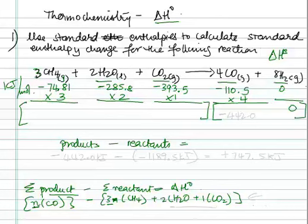After doing all the math, I will not write each number, you can do the calculation yourself. The product minus reactant, the total number of products was -442.0 kilojoules, because this is 0 anyway. Then -442.0 kilojoules minus the reactants, which the total was -1189.5 kilojoules. Remember minus and the minus.